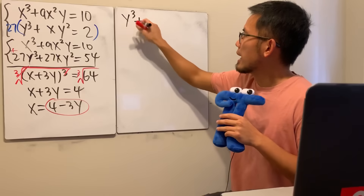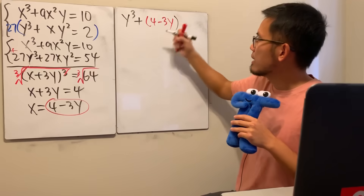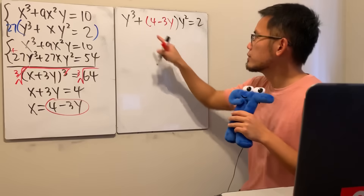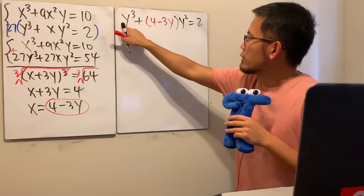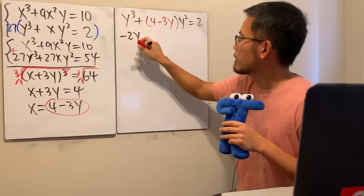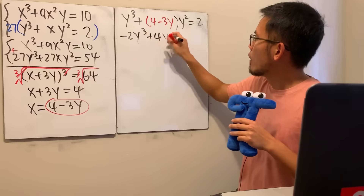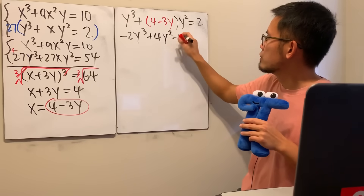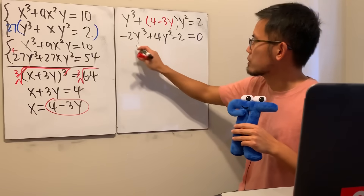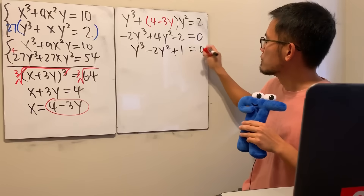Plugging x = 4 − 3y into the second equation: y³ + (4 − 3y)·y² = 2. Expanding: y³ − 3y³ + 4y² = 2, which gives −2y³ + 4y² − 2 = 0. Dividing everything by −2 we get y³ − 2y² + 1 = 0.